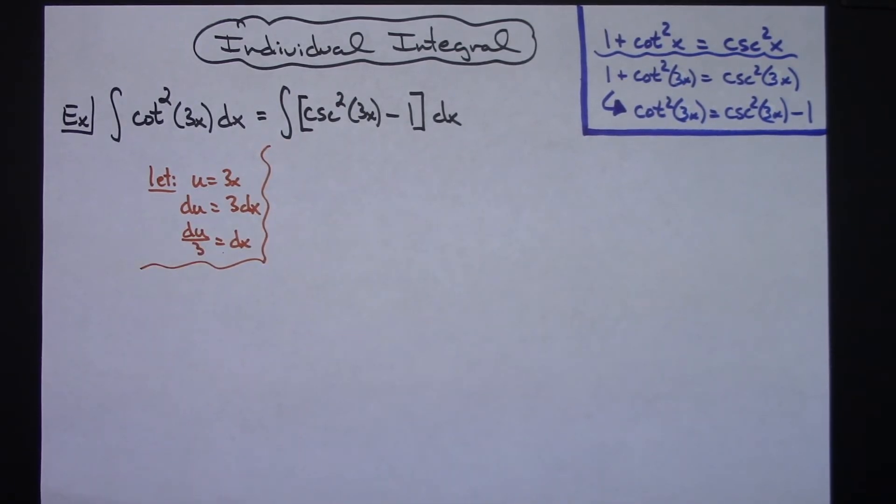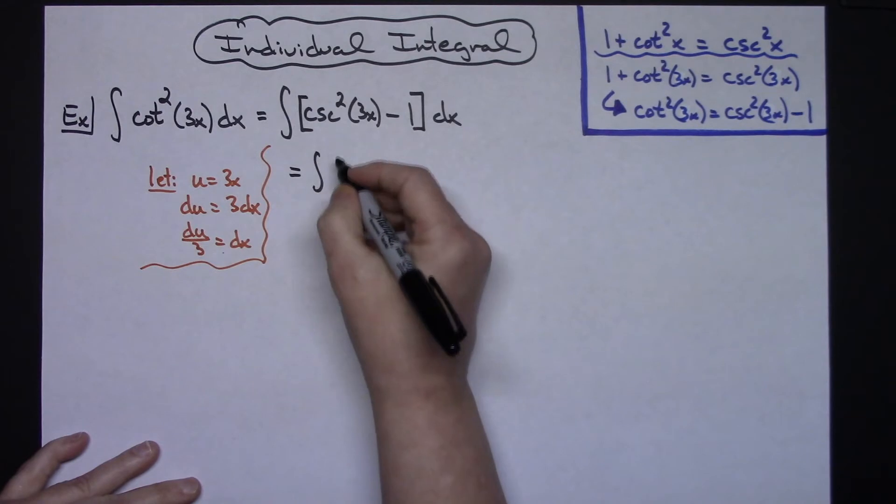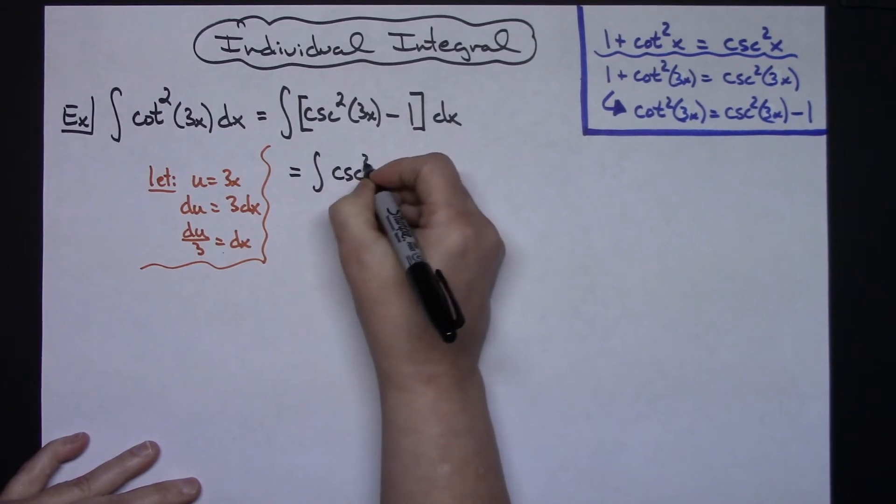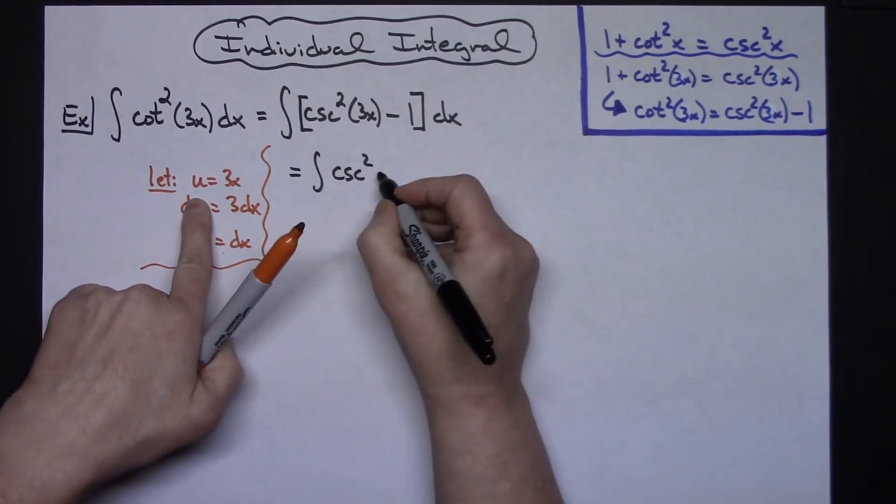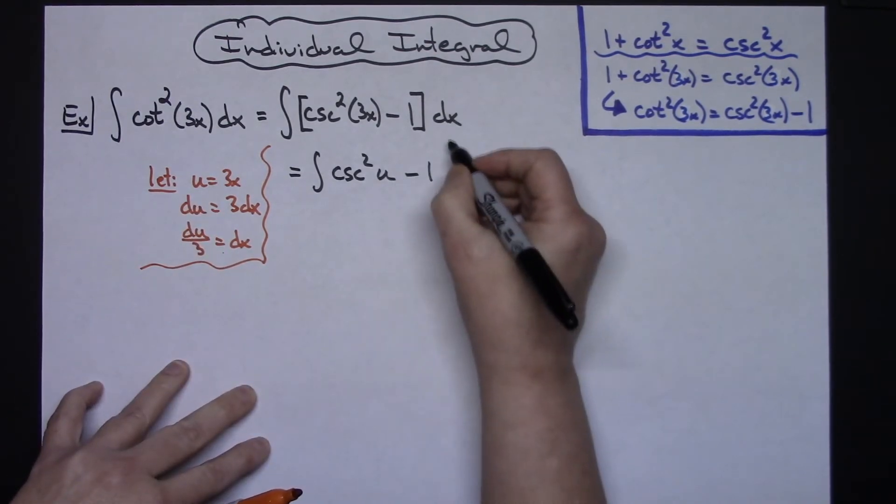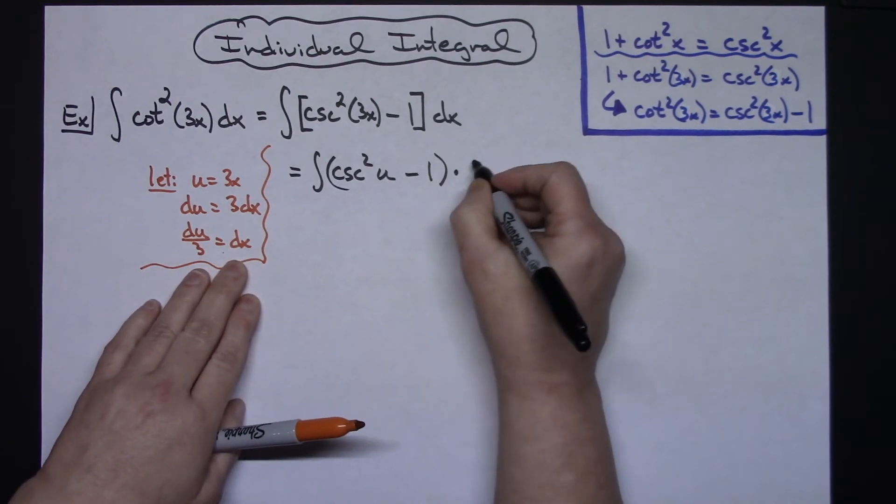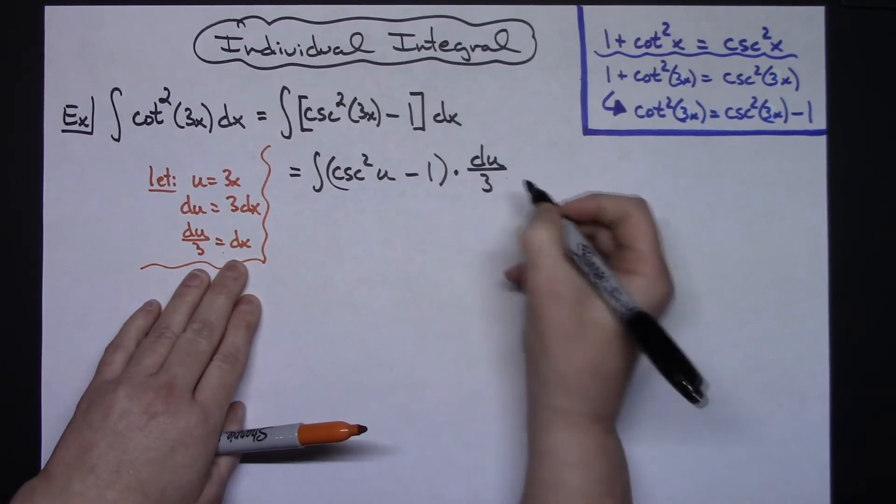Now after I do that then I can come up and substitute in. So I'll have the integral of cosecant squared—the 3x can be replaced with a u—and then I'll have the minus 1, and then replacing dx with what that equals, a du over 3.